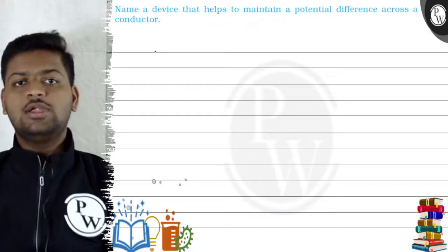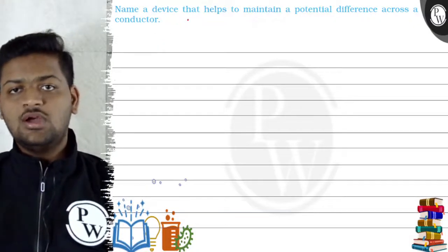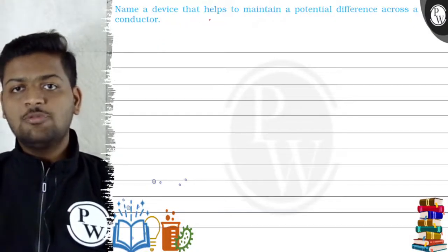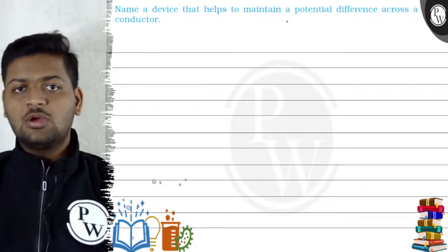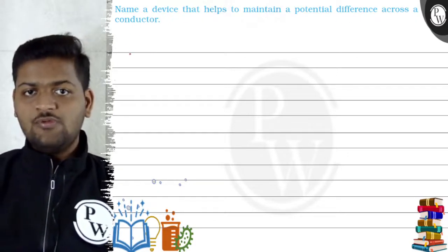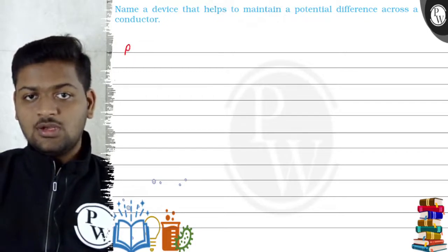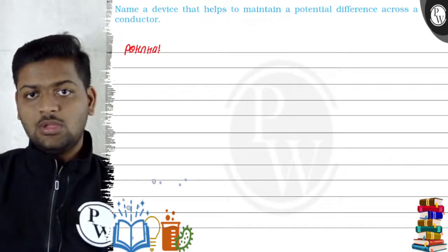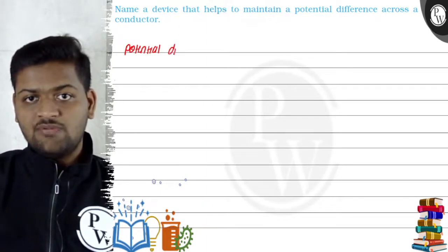Hello everyone, let's see this question: name a device that helps to maintain a potential difference across a conductor. So first of all, we will have a discussion about potential difference.